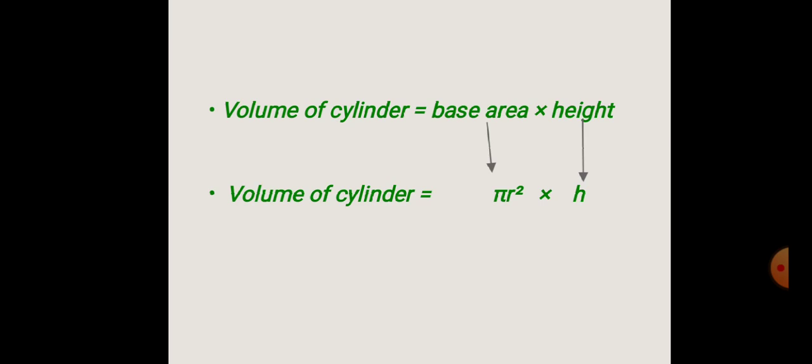The volume of a cylinder tells us how much capacity it has. The base of a cylinder is circular, so we find the area of the circle, which is πR², and multiply by the height H. Therefore, the volume of a cylinder is πR²H.